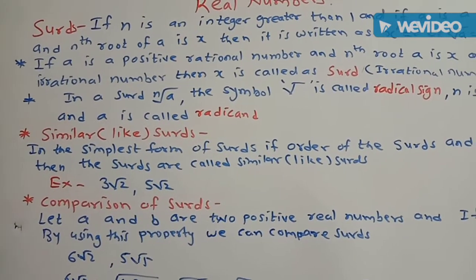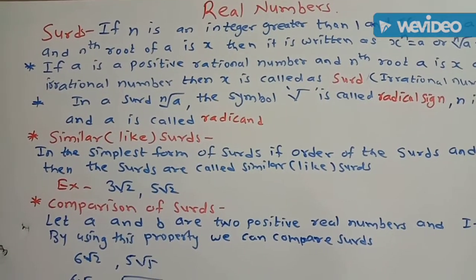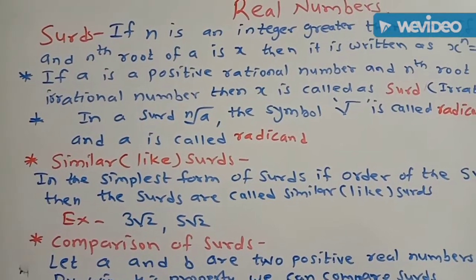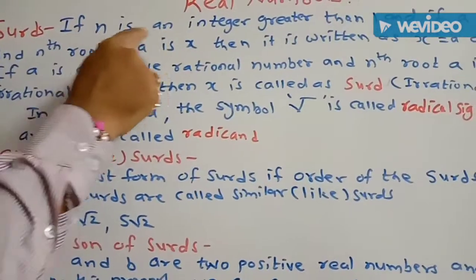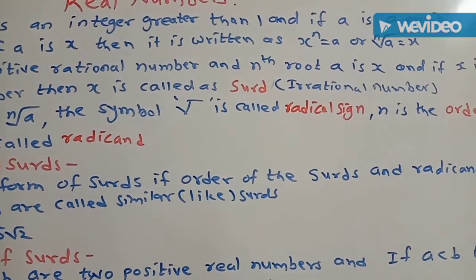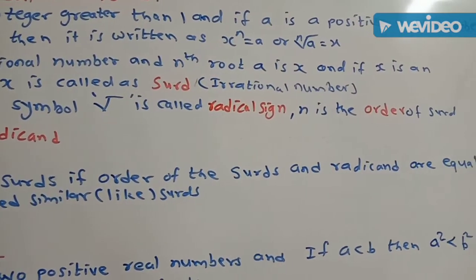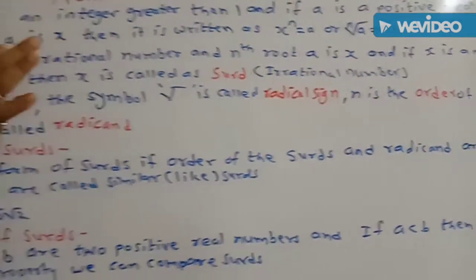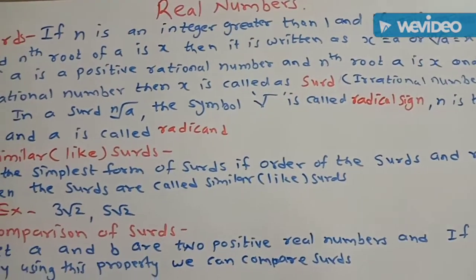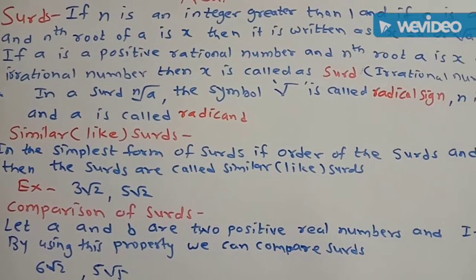Students, today I am going to teach you some topics of chapter Real Numbers. The topic is SIRD. If n is an integer greater than 1, and a is a positive real number, and the nth order of a is x, then it is written as x raised to n is equal to a, or nth root of a is equal to x.